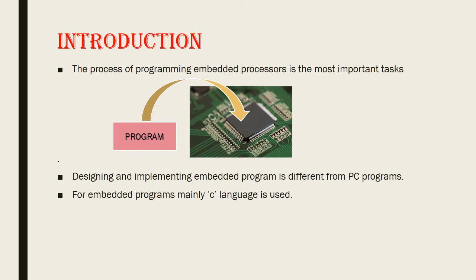In embedded systems, embedding software into hardware is a very important task. That means we have to embed a program into the processor. This programming is quite different from ordinary PC programs. For this, we will be using the language C — in embedded systems, it is called Embedded C.